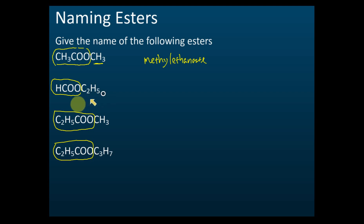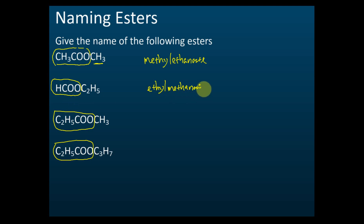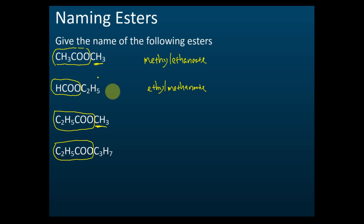For the next example, we name the part from the alcohol first — that's CH₃, which is methyl, one carbon. And then we have three carbons from the carboxylic acid part, so it's propanoate. So the name is methyl propanoate.